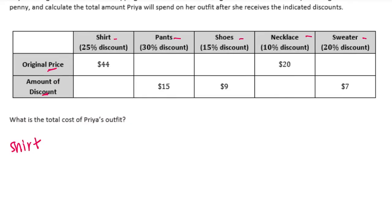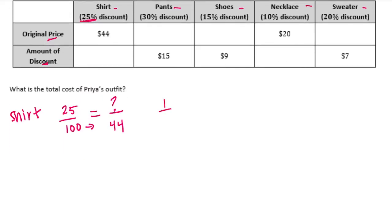Let's start with the shirt. She gets a 25% discount, so that's 25 out of 100. The original price — the whole — is $44 on the denominator, and we don't know the numerator. We can't easily get from 100 to 44, so I need to reduce. 25% equals 1 fourth. So 1 fourth equals what out of 44. 4 times 11 is 44, so 1 times 11 is 11. The discount amount is $11.